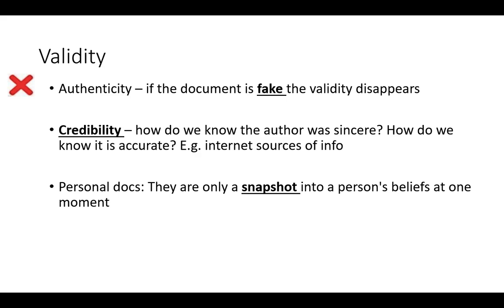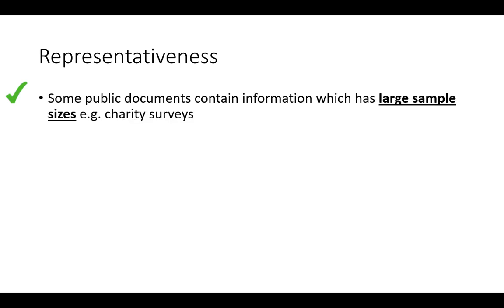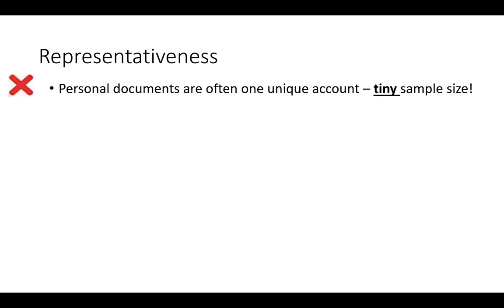Representativeness: some public documents contain information with large sample sizes — charities conduct big surveys and produce reports with data that may be representative. However, most documents lack representativeness in the extreme. Personal documents are often one unique account — one photograph, one painting, one diary — with a sample size of essentially one, giving almost no representativeness.